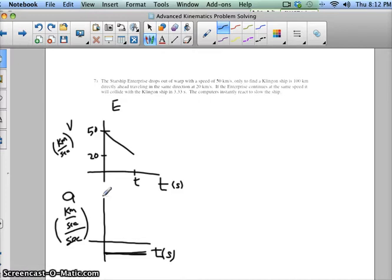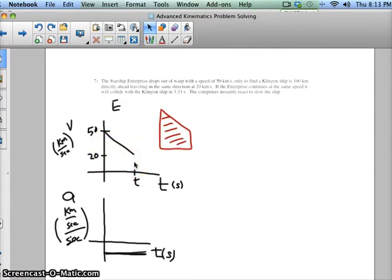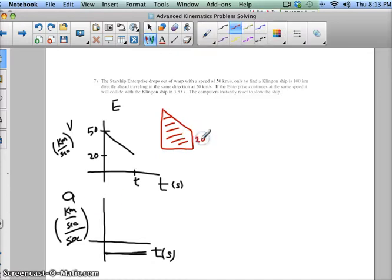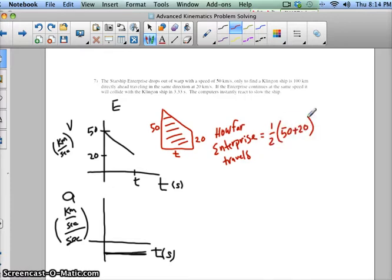We could set up our equation as the area of this trapezoid. This side is 20, this side is 50, this side is T. So we've got the average of the velocity times time. We do know that we have 100 kilometers between the Enterprise and the Klingon ship, but that's not going to be that displacement. How far Enterprise travels is going to be one-half times 50 plus 20 times T.